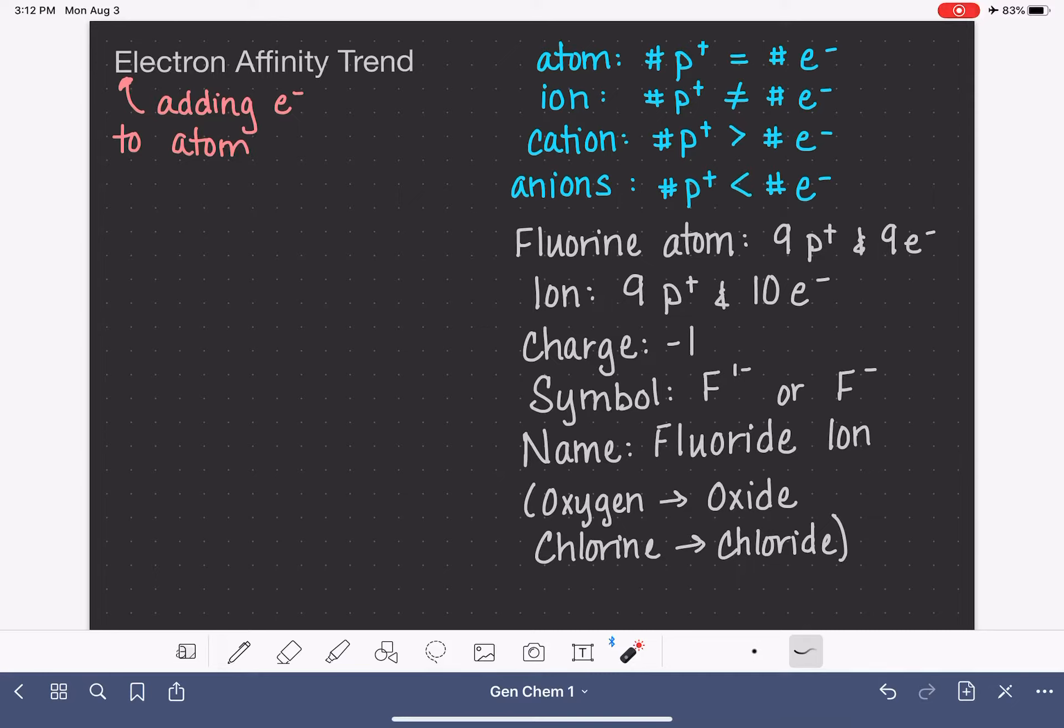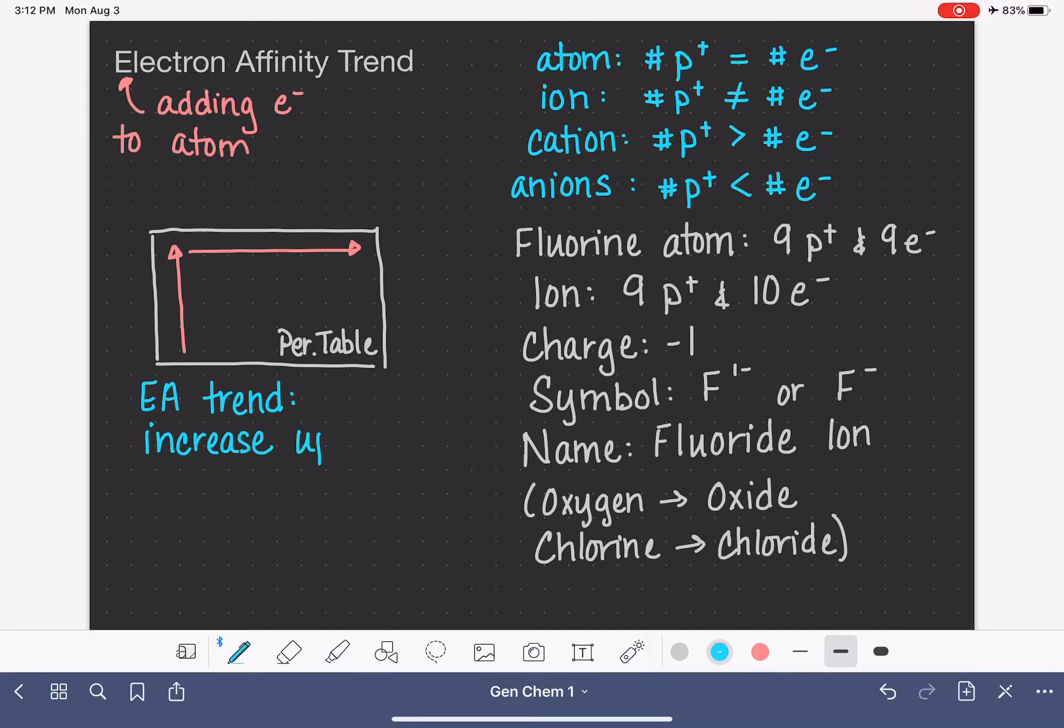Let's talk about the trend of electron affinity. If we are using this rectangle to represent the periodic table, the trend of electron affinity increases as we go up a column, and it also increases as we go from left to right. The electron affinity trend increases as we go up and also increases as we go to the right. This is literally following the effective nuclear charge trend, following ENC or Zeff.